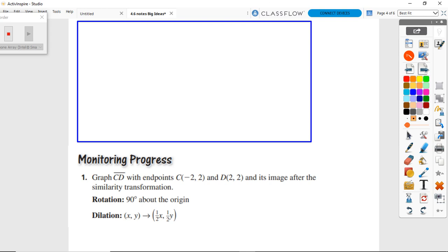Alright, pause the video here and try this monitoring progress question. Alright, welcome back. Now you've got a segment. Let's see here, a 90 degree rotation. 90 degree rotation says switch the order and the sign on your new x value. There would be our 90 degree rotation using our rules.